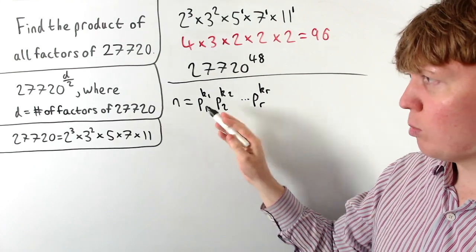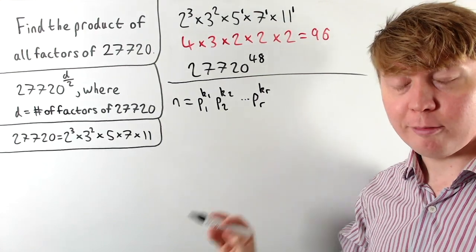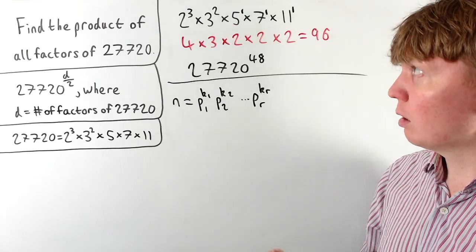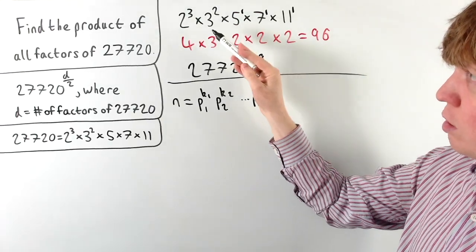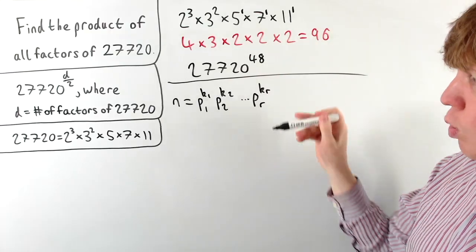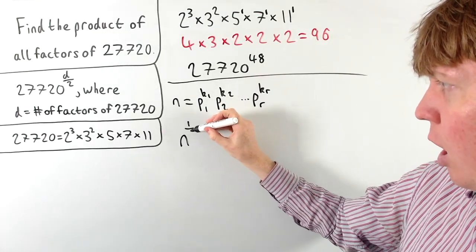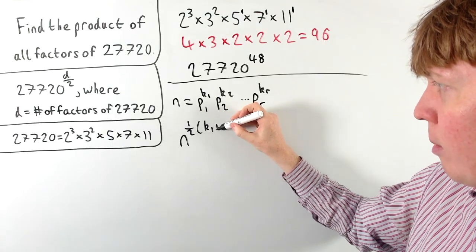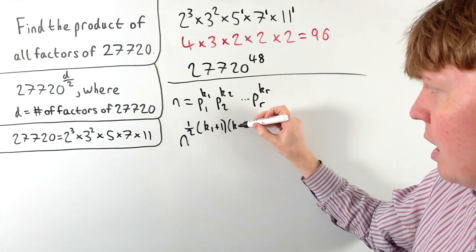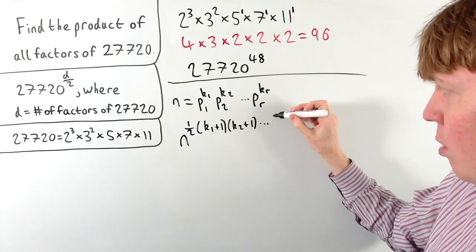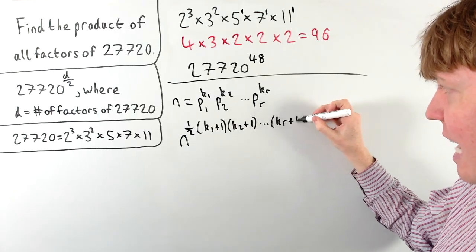So now our answer here is going to be n raised to the power of the number of factors divided by 2. And just like we've seen here, we essentially just need to multiply together all of the powers plus 1. So then we're going to have n raised to the power of a half times k1 plus 1 times k2 plus 1 and so on, all the way up to kr plus 1.